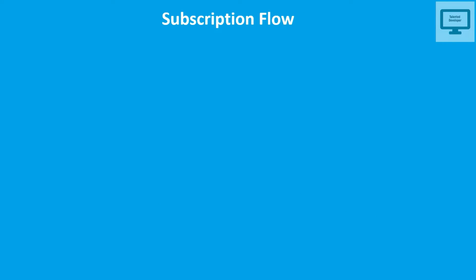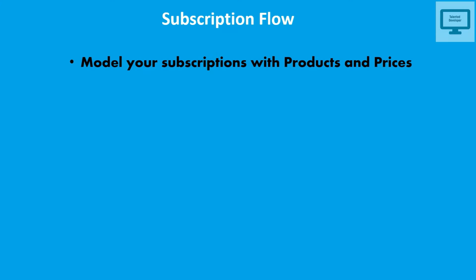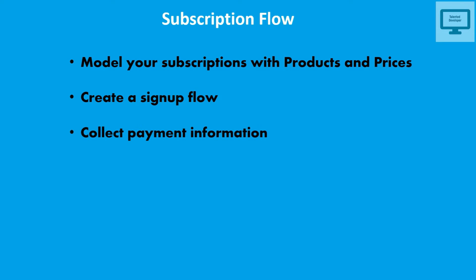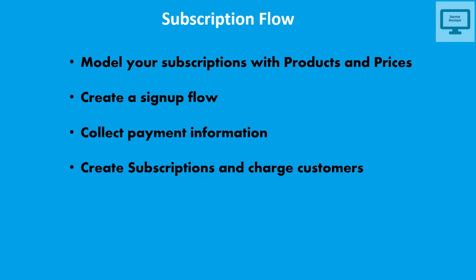Now, how do we design a subscription flow? First, you model your subscription with the product and price — for example, selling a photo at a certain amount. Next, you create a sign-up flow where you ask for customer details. After that, you collect the payment information, and once you have everything, you create the subscription and charge the customer.